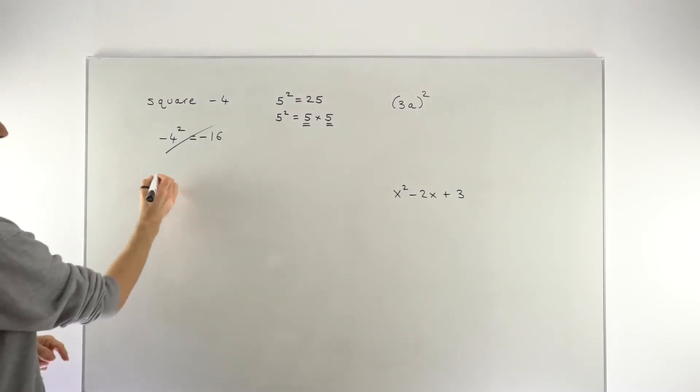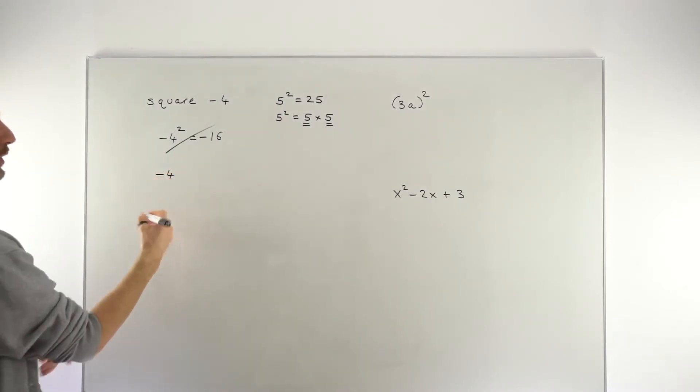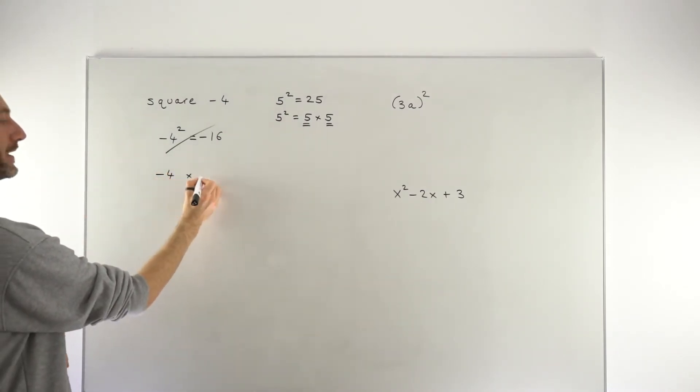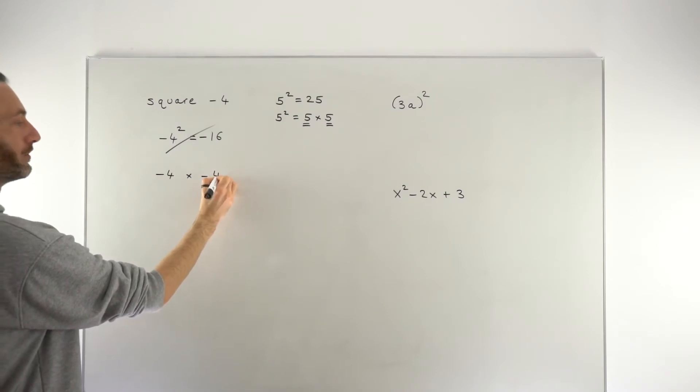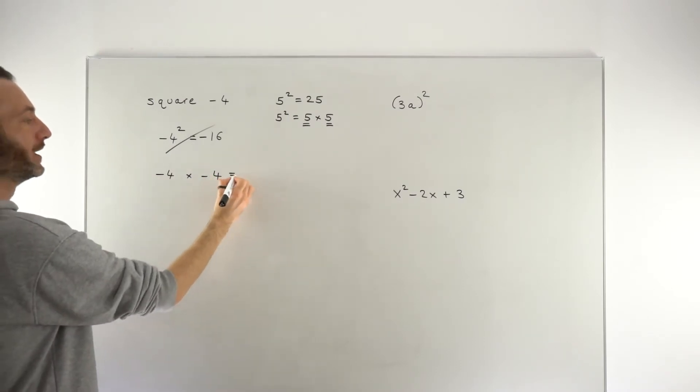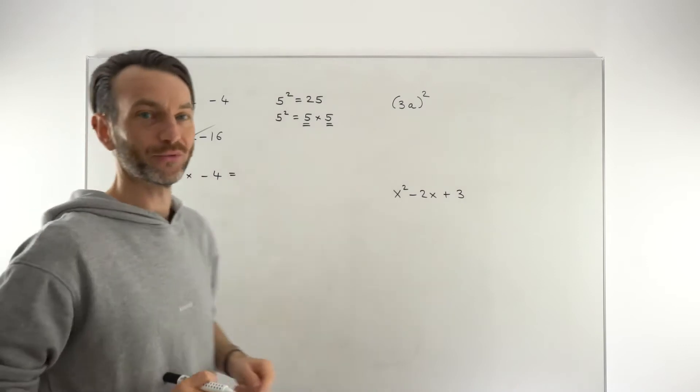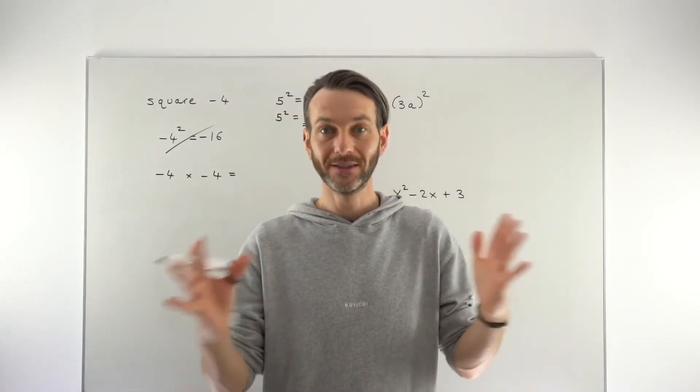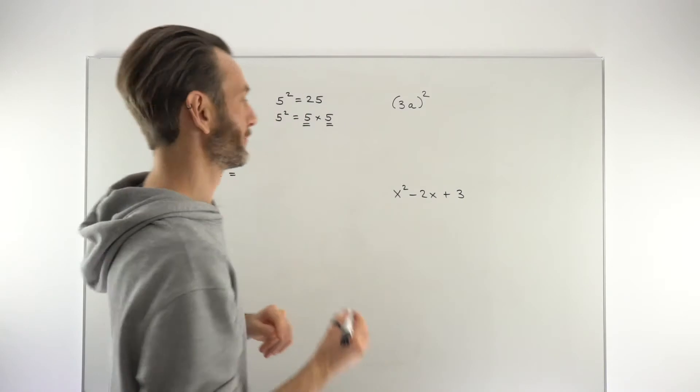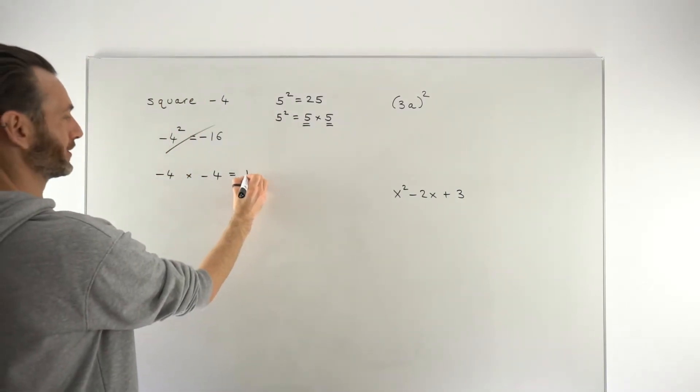So taking that logic to the number minus 4, if we take minus 4 and want to square it, then that should be the operation minus 4 times minus 4. But when we do minus 4 times minus 4, those are two negative numbers, in other words, a double negative, which makes a positive. So that's going to come out to be positive 16.